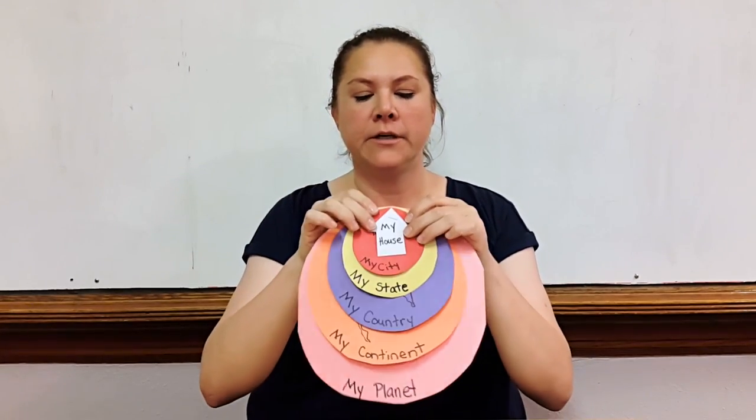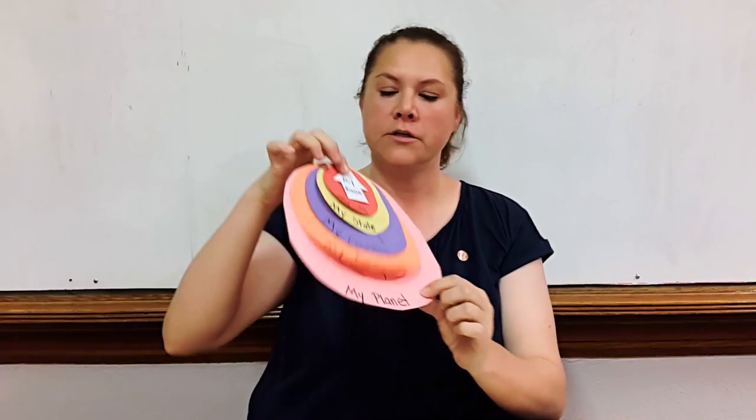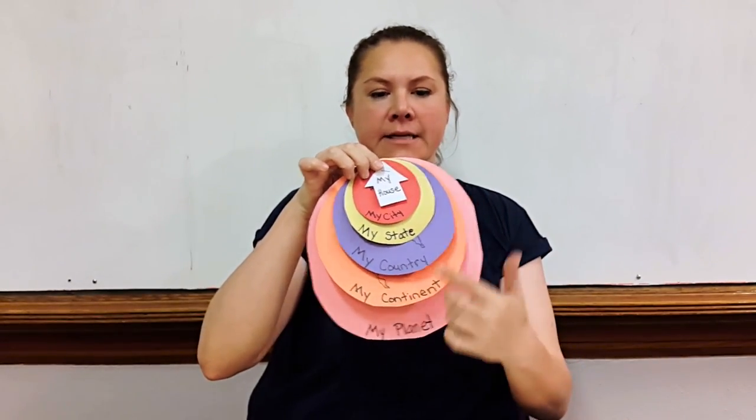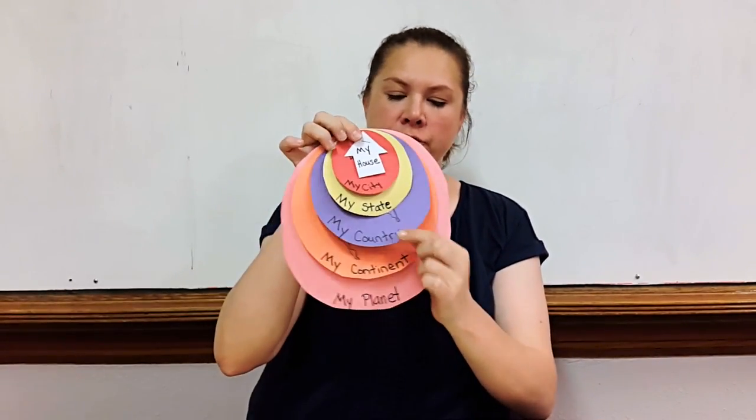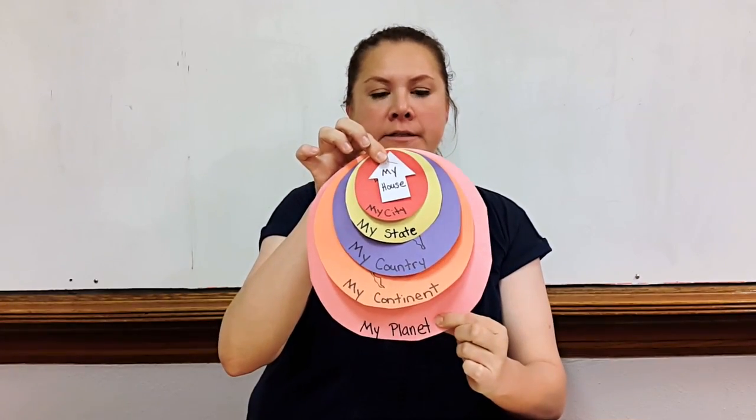The first one is my house, and what I'm doing is I label each circle, so I have my house, my city, my state, my country, my continent, and my planet.